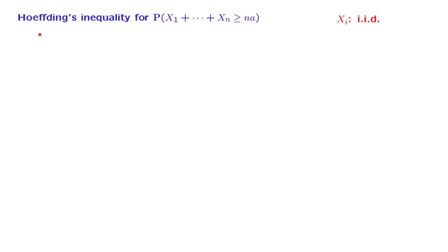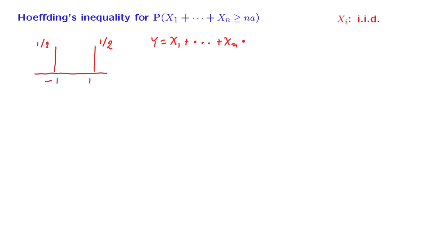Here is the special case we will consider. The random variables, the Xi's, are equally likely to take the values minus 1 and plus 1 with equal probability. We're interested in the random variable which is the sum of the X's. The expected value of each Xi is equal to 0, because the distribution is symmetric. Also, the distance of Xi from the mean always has magnitude 1, and for this reason the variance of the Xi's is equal to 1.